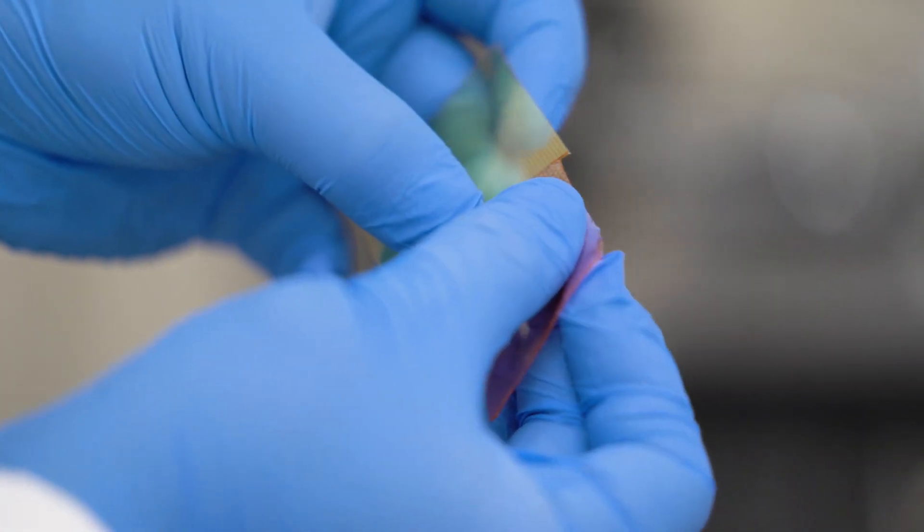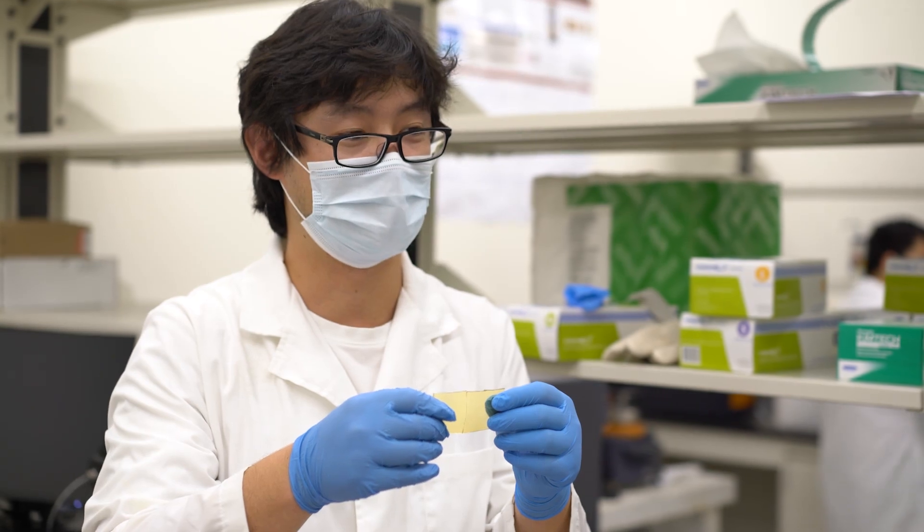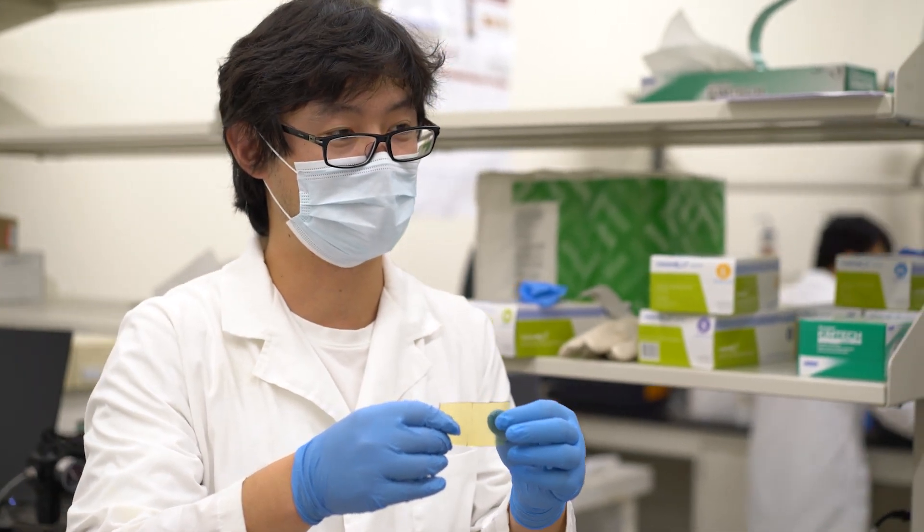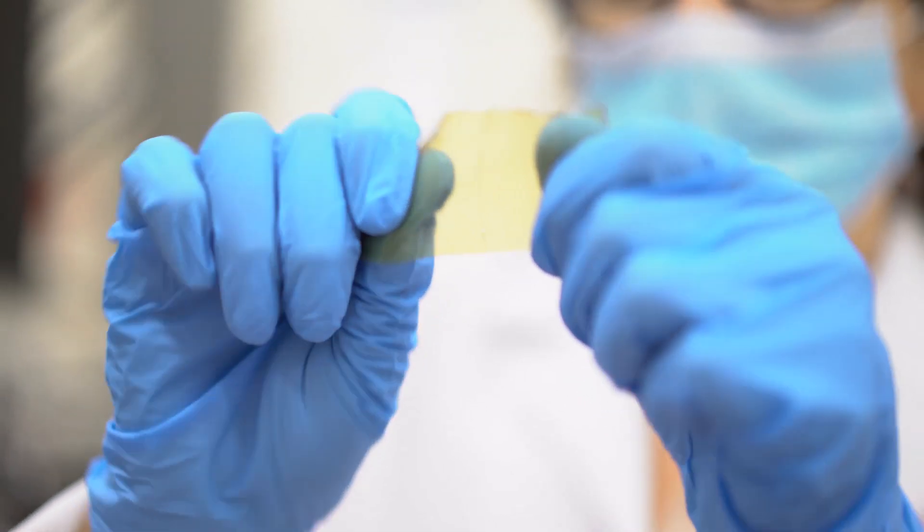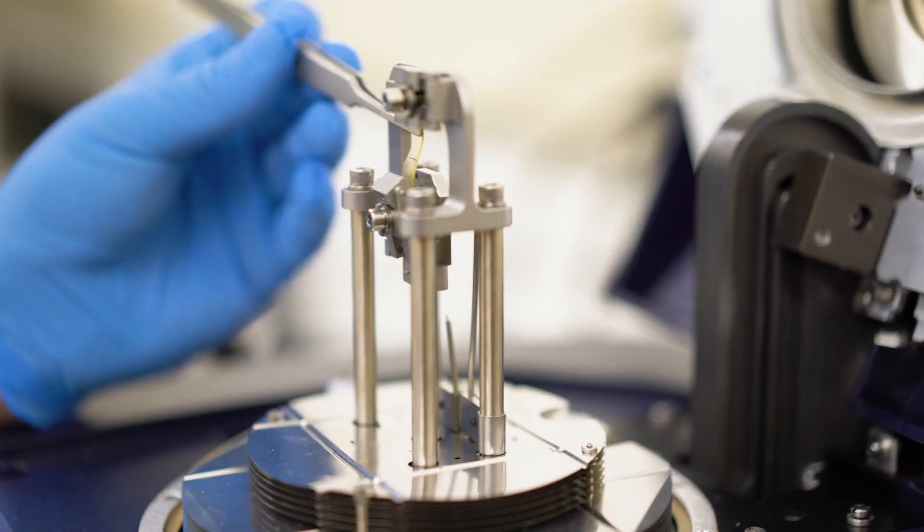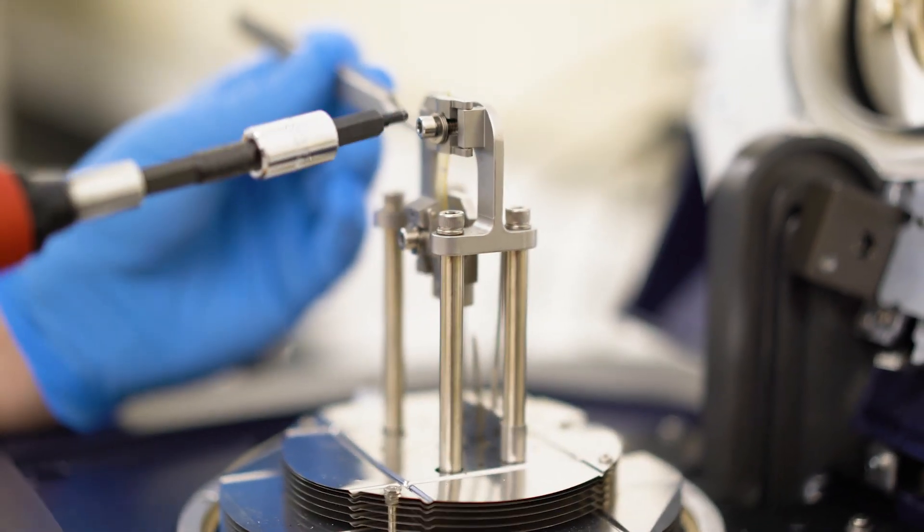have created materials with morphing abilities. Derived from a single parent polymer, these synthetic materials can be made super soft or very hard. They can heal themselves if damaged and can even morph into another shape.